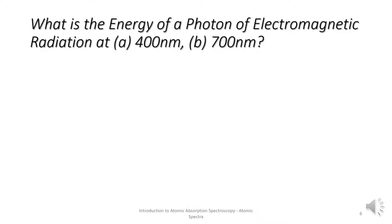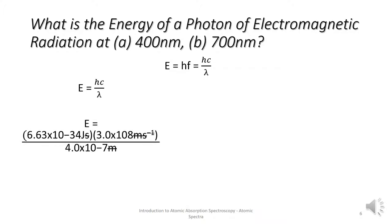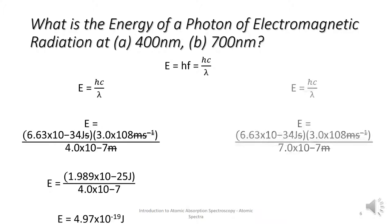What is the energy of a photon of electromagnetic radiation at A, 400 nanometers, and B, 700 nanometers? So we can use Einstein's equation and rearrange it to find that E equals HC over lambda. For 400 nanometers, we put in our values, we find that E equals 4.97 by 10 to the power of minus 19 joules. For 700 nanometers, we put in our values, we find that E equals 2.84 by 10 to the power of minus 19 joules.